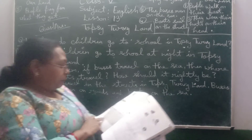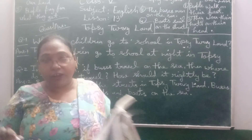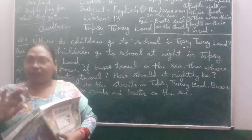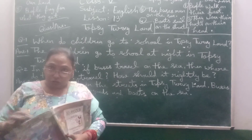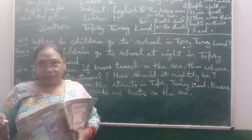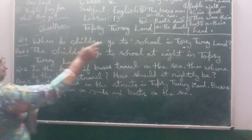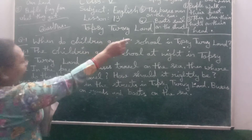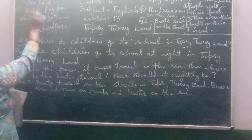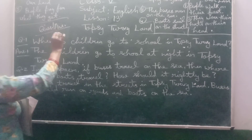The last sentence: in Topsy Turvy Land, people pay for what they don't get. But in the rest of our land, people pay for what they do get.